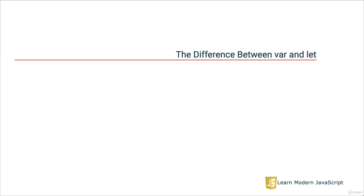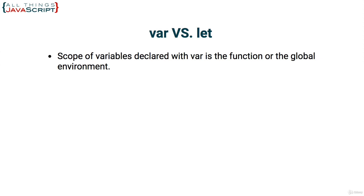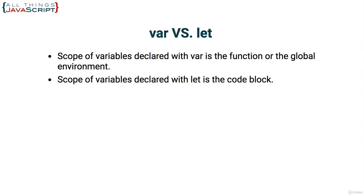The ES6 standard provided a new way to define variables, so let's look at the difference between `var` versus `let`. The main difference is in how variables are scoped, but there is also a difference related to hoisting. The scope of `var` is the function itself or the global environment. The scope of `let` is simply the code block — the block of code contained within curly braces. As for hoisting, `let` variables appear not to be hoisted, but in reality they are hoisted, just not initialized. We'll discuss hoisting in the next topic.